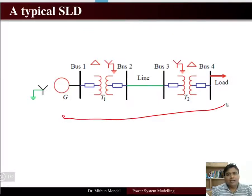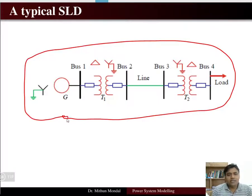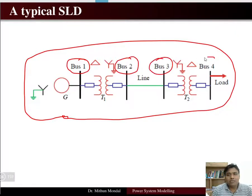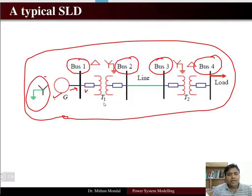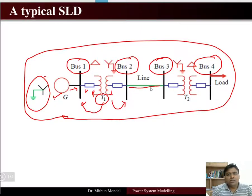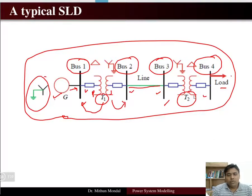A typical single line diagram example shows four buses. The generator, which is star grounded, supplies energy to bus 1. Through a circuit breaker, transformer T1 primary is connected to bus 1 and its secondary is connected to bus 2. A transmission line transmits energy from bus 2 to bus 3. Transformer T2 primary is connected to bus 3 and secondary is connected to bus 4, which supplies a load.